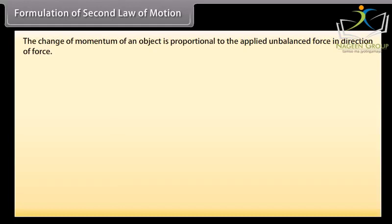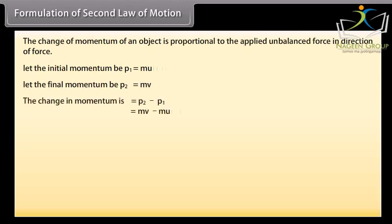The change of momentum of an object is proportional to the applied unbalanced force in direction of force. Let the initial momentum be P1 which is equal to M U. Let the final momentum be P2 which equals M V. The change in momentum is P2 minus P1 which equals M V minus M U. Rate of change of momentum is M into V minus U whole upon T.